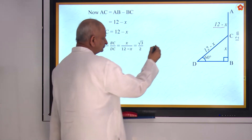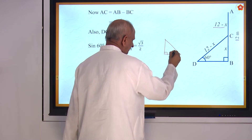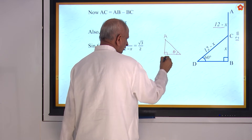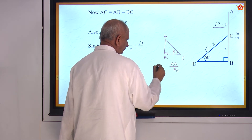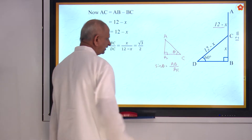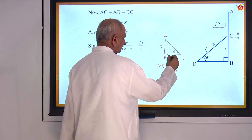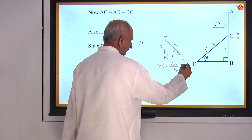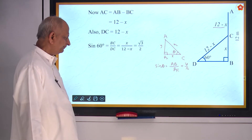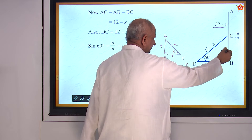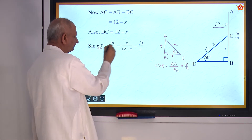What is sin theta? Sin of an angle theta is equal to opposite side divided by hypotenuse — this is what you have studied; they are called trigonometric ratios. So here, sin 60 = BC by DC, where BC is x and DC is 12 minus x. Therefore x by (12 minus x) equals sin 60, which is root 3 by 2.